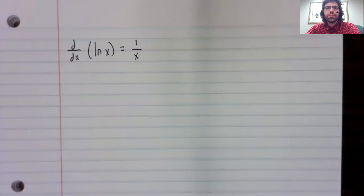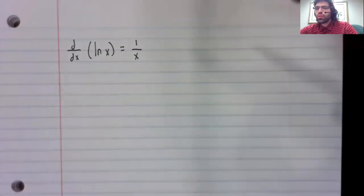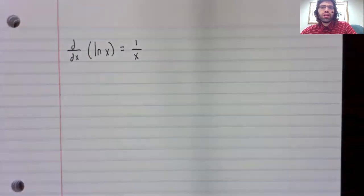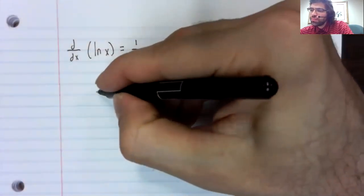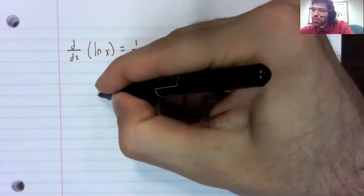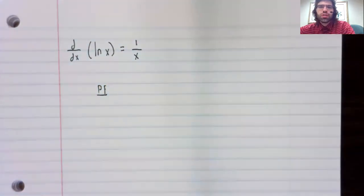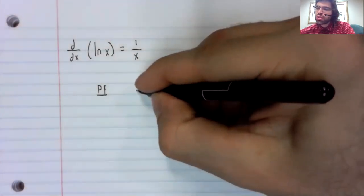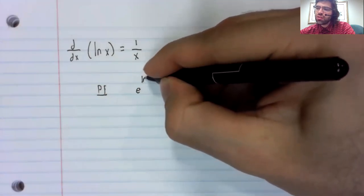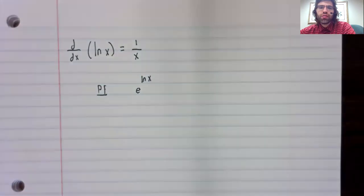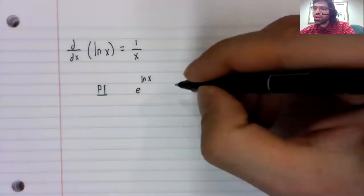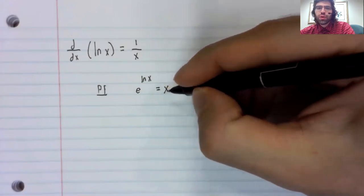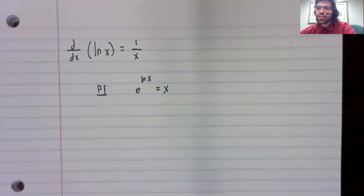Why? I mean, this isn't a proofs course, but we can demonstrate this fairly easily. The natural logarithm and the natural exponential function are inverses. So, if we compose them, they'll cancel out and give us x.